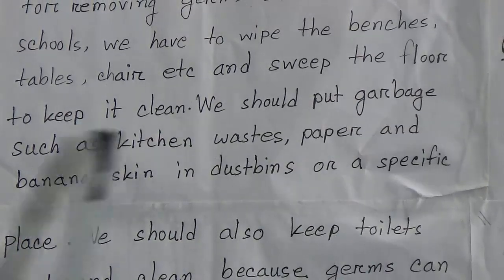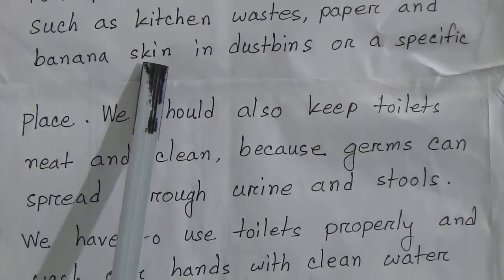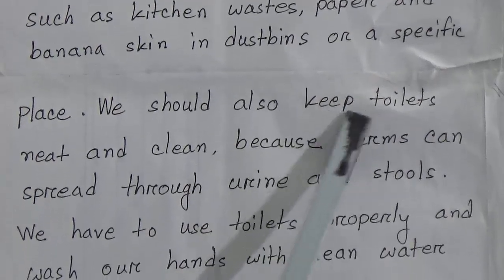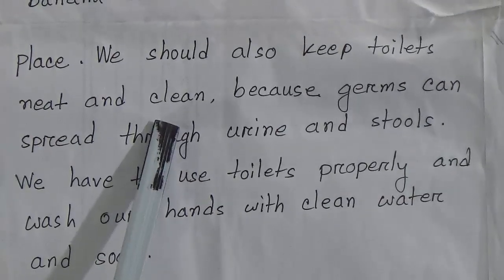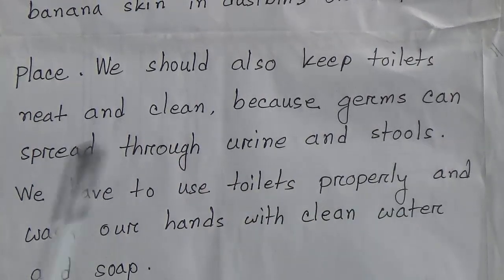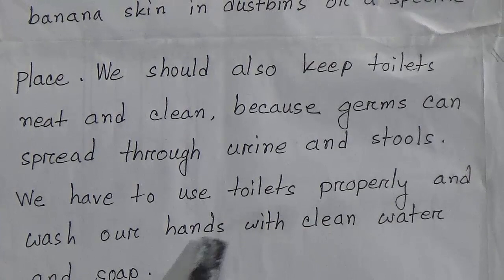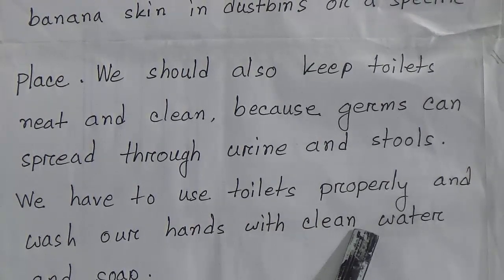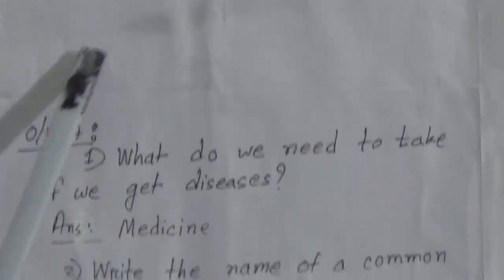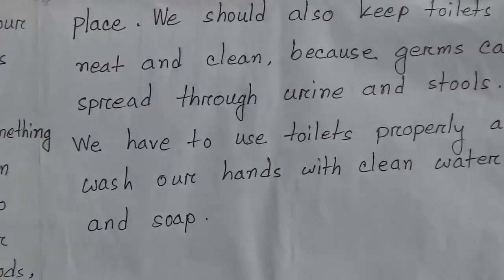We should put garbage such as kitchen waste, paper, and banana skins in dustbins or a specific place. We should also keep toilets neat and clean because germs can spread through urine and stools. We have to use toilets properly and wash our hands with clean water and soap.